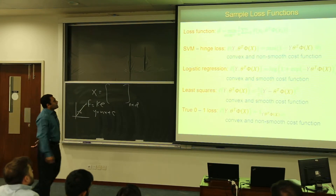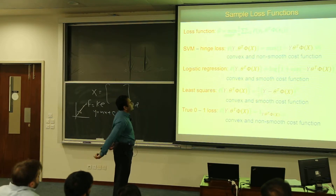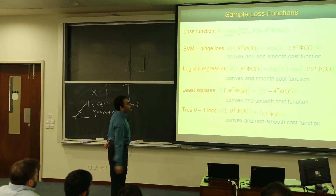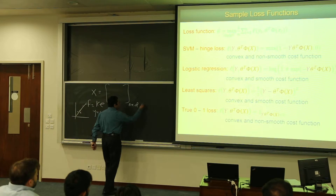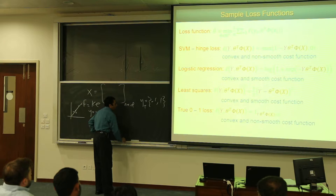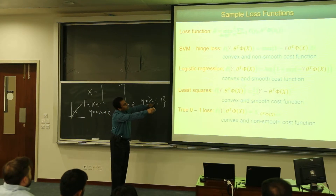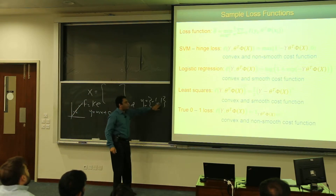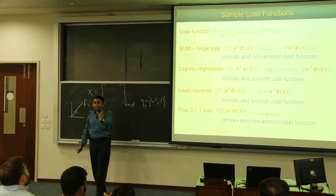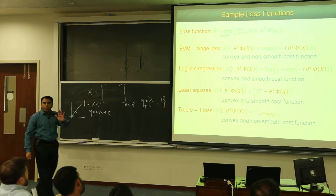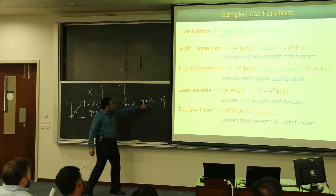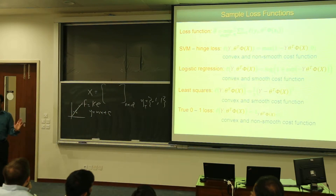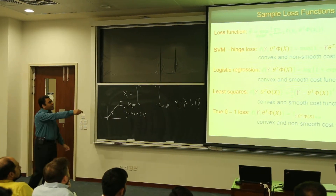There are quite many loss functions. For the support vector machine, there is a hinge loss — this is a classification problem, so the loss is a maximization over 0 and (1 minus y times the inner product). If my labels are minus 1 and plus 1, and my predicted label matches the true label, that product is always plus 1, so 1 minus 1 equals 0 — meaning zero loss and perfect training performance. The hinge loss is convex but non-smooth.